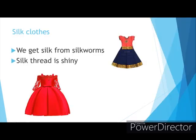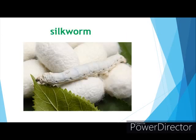Next is silk clothes. We get silk from silkworms. Silk thread is shiny — it is a very shiny, bright and expensive thread. Can you see the silkworm in the picture? You can also see white colored balls called cocoons. We have to put these cocoons in boiling water to get silk.